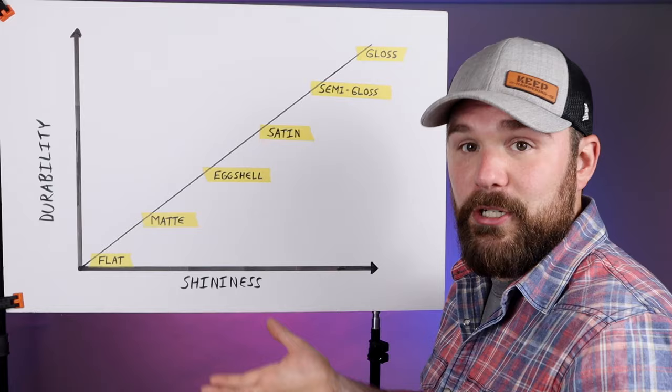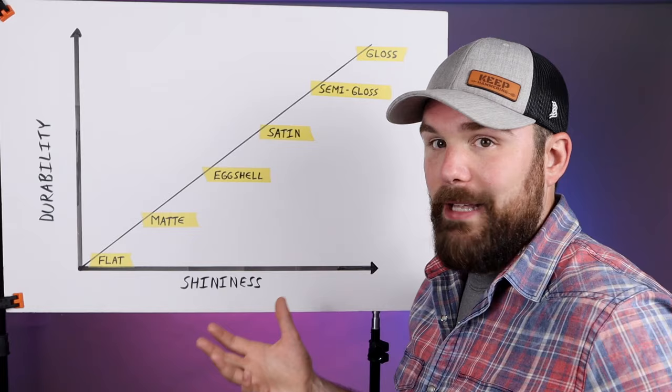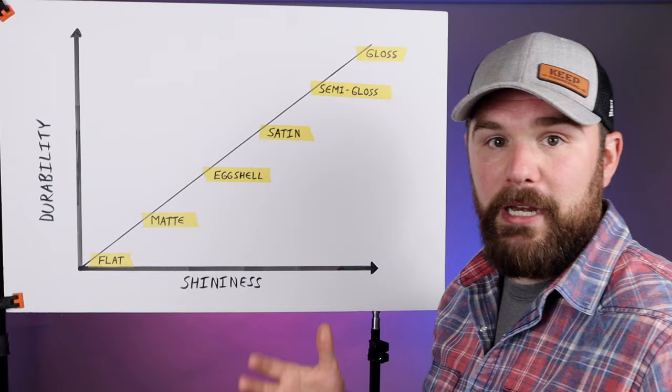Also, aesthetically, flat paint looks really nice. It absorbs light, it doesn't bounce light off, so it has a very soft finish, and it's the look that most people are going for inside of their homes, particularly on their ceilings.